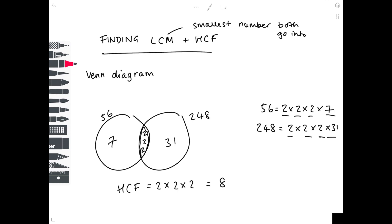For the lowest common multiple — the smallest number both go into — you multiply every number that appears in the entire Venn diagram together. So that's 7 × 2 × 2 × 2 × 2 × 31, which you'll probably need a calculator for, giving 1736. And there are your two answers.